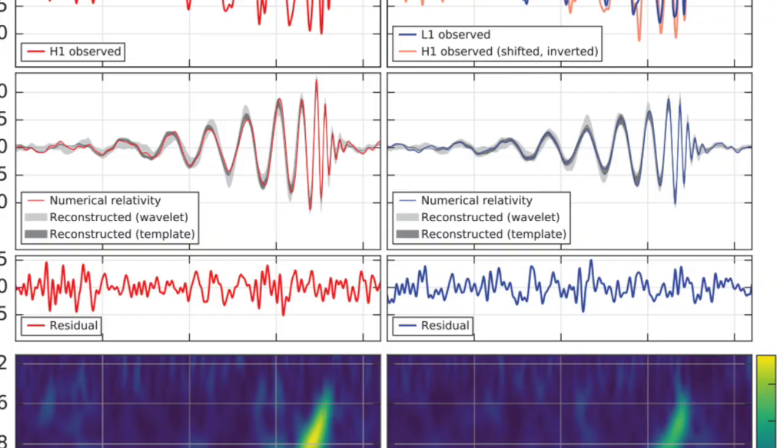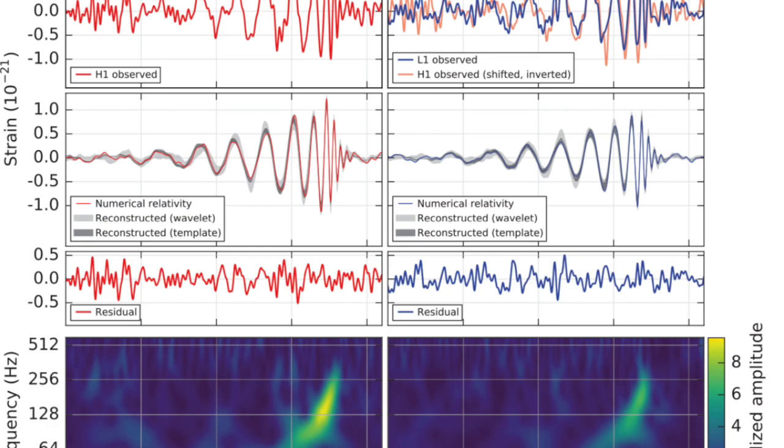Again, Einstein passed the test. This finding is also important because it marks the first time a second tone, called an overtone, has been found in the ringdown data.